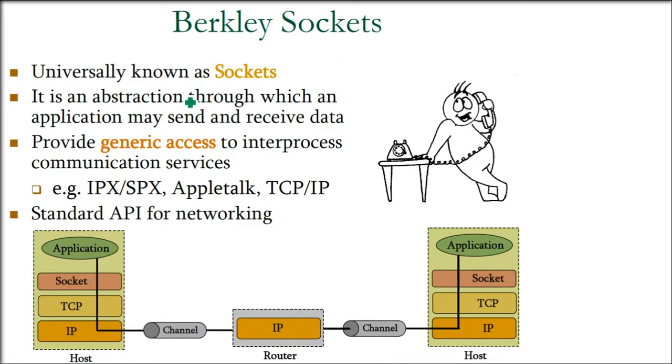Berkeley sockets - we call them as sockets. These are universally known as sockets. It's an abstraction - what is an abstraction? So you can call it as an API. If you want to send a gift, you put a gift and you have a wrapper, you have a box. So this covering is abstraction.